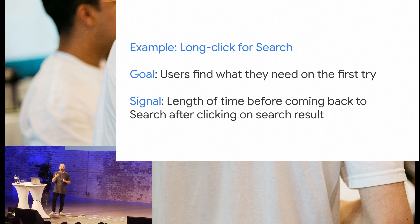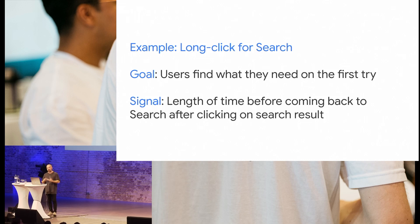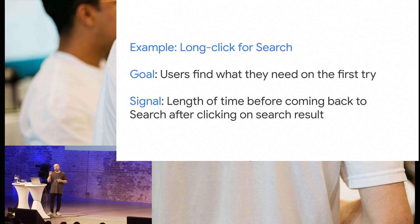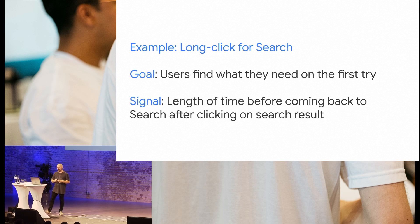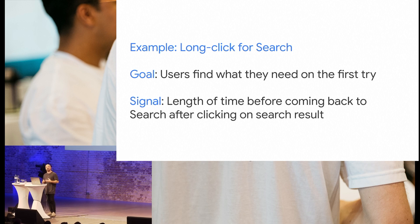Here's an old Google example called the long click, from when Google was a search engine only. Larry and Sergey defined the goal that users should find what they need on the first try — the first click. Nobody goes to Google because they enjoy using Google; they're looking for something outside of Google. The signal they defined is the length of time that passes before people come back to search. The longer this metric, the more likely they got what they wanted. It's almost counterintuitive because you're trying to get people away from your product. It was a very successful metric.